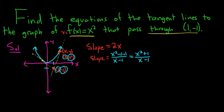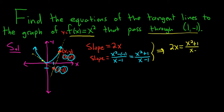So on one hand, the slope is equal to 2x — it's the derivative, slope of the tangent line is the derivative. On the other hand, slope is rise over run. Therefore, these two equations must be equal. So this implies that 2x is equal to x squared plus 1, over x minus 1.